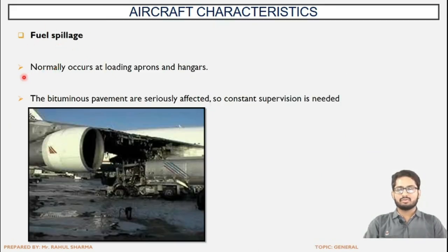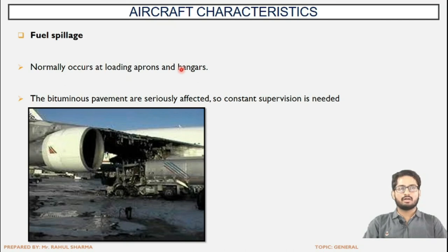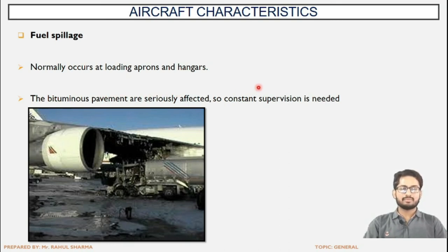Next is fuel spillage. Spillage normally occurs including near the hangars — these are specific terminal areas where spillage occurs in good quantity. The bituminous pavement might get affected, so constant supervision should be done to ensure there is no such spillage, and if spillage occurs, remedial measures are taken as early as possible.